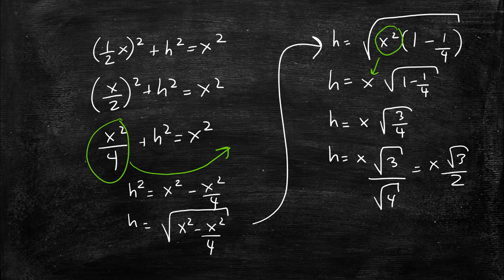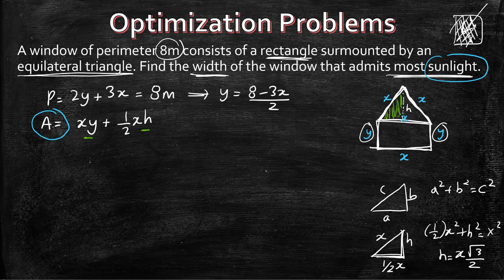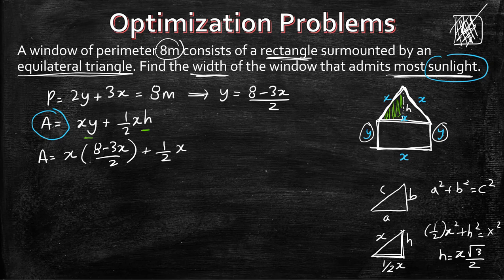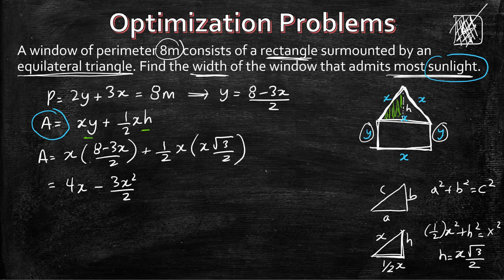Now we have h and y, so we can substitute those into our area equation. We get A equals x times (8 minus 3x) over 2, plus one-half times x times (x times root 3 over 2). Simplifying, the area function becomes 4x minus 3x squared over 2 plus root 3 times x squared over 4.